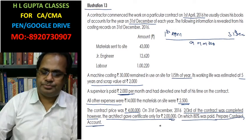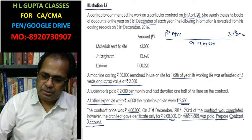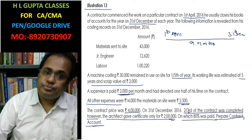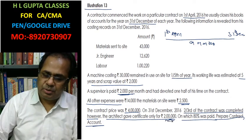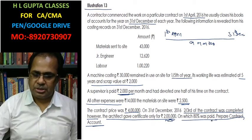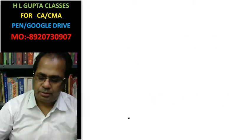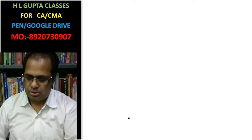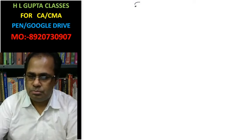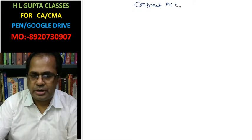Work completed is two-thirds, but it is certified at one-half. 80% of the certified amount was received by the contractor. I am going to solve the question. Now, let's set up the Contract Account.